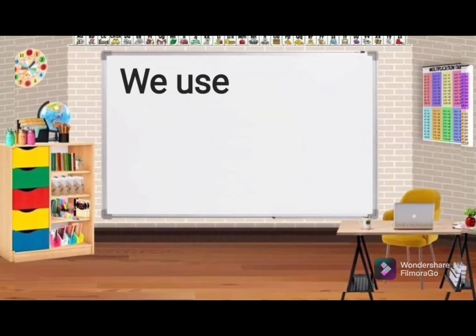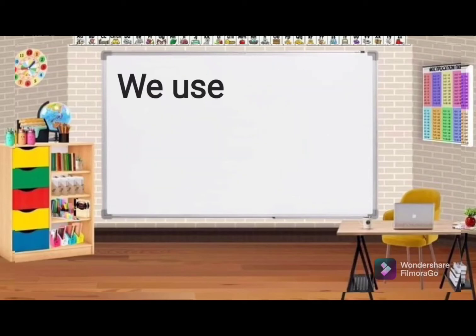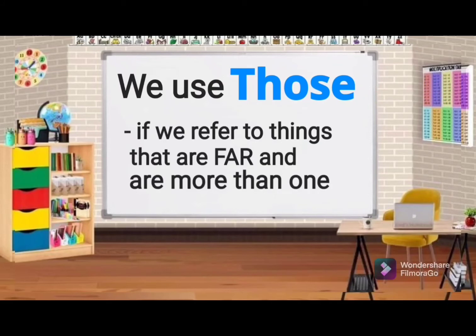These and those: we use these if we refer to things that are near and are more than one. We use those if we refer to things that are far and are more than one.